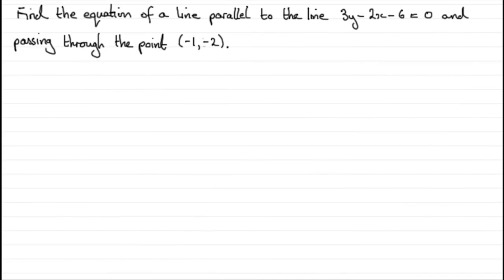Hi, welcome to this example on finding equations of lines. What we've got to do is find the equation of a line parallel to the line 3y minus 2x minus 6 equals 0 and passing through the point minus 1, minus 2.